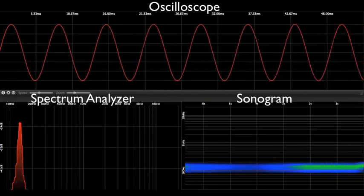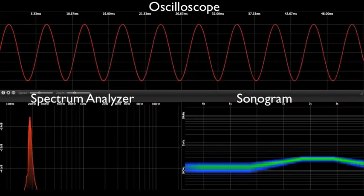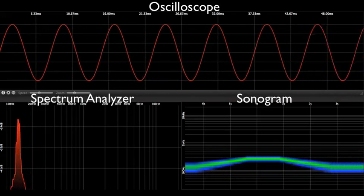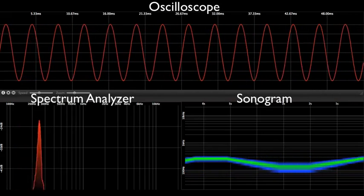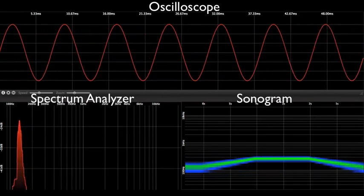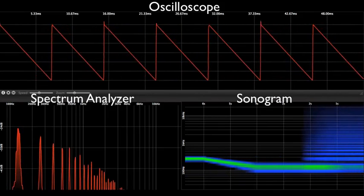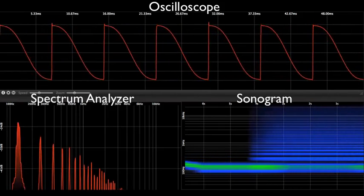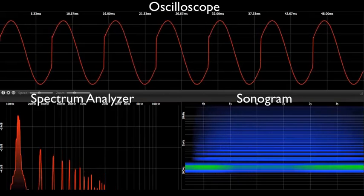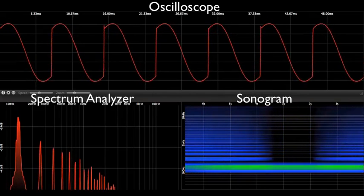If I change frequency, we see it as changing the number of repetitions within the oscilloscope, we see it as a horizontal motion in the spectrum analyzer, and we see it as a vertical motion within the sonogram display. If I change timbre, we see it as a change in wave shape in the oscilloscope, we see additional energy at additional frequencies shown in the spectrum analyzer, and we see additional lines shown in the sonogram display.